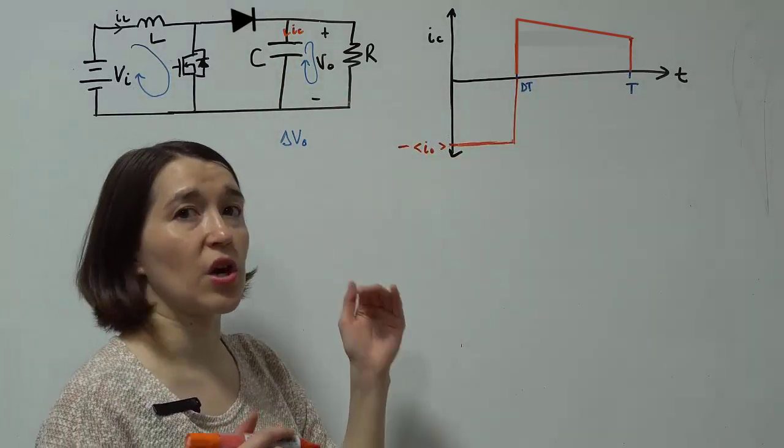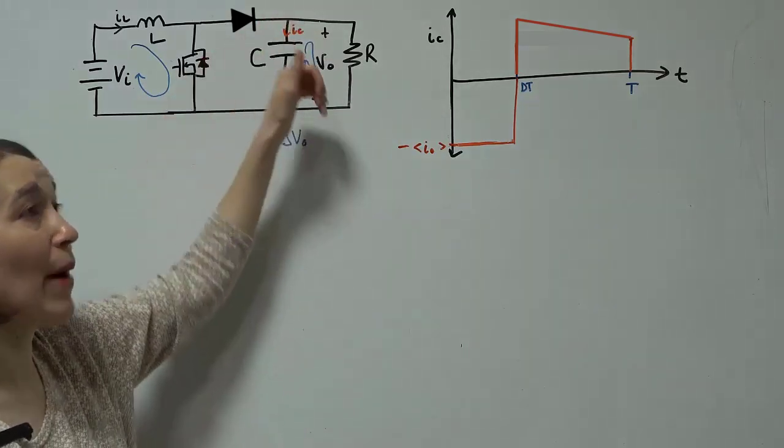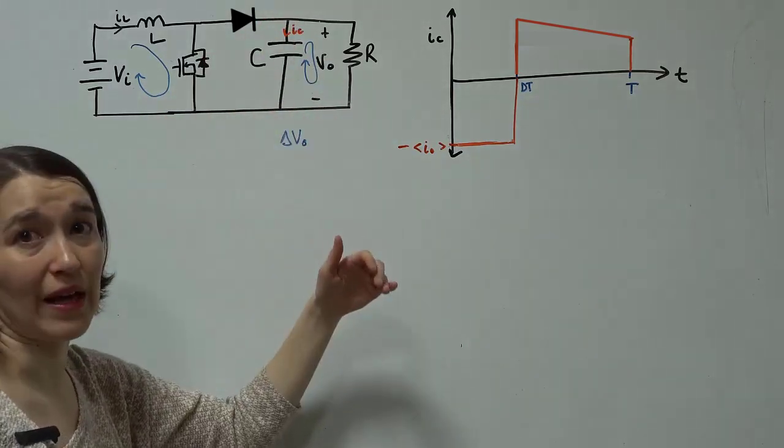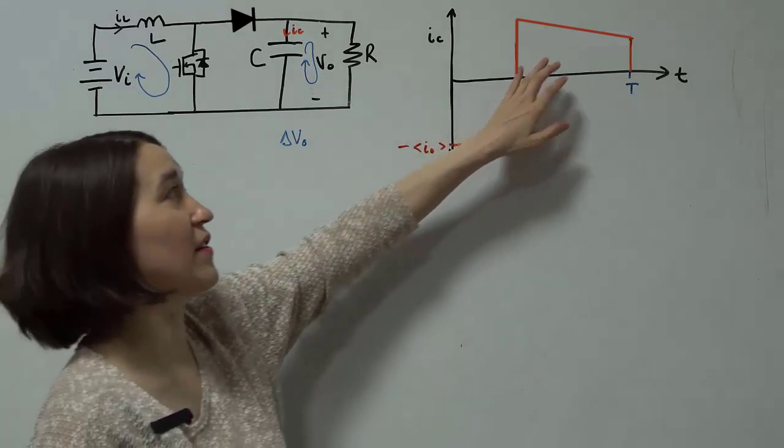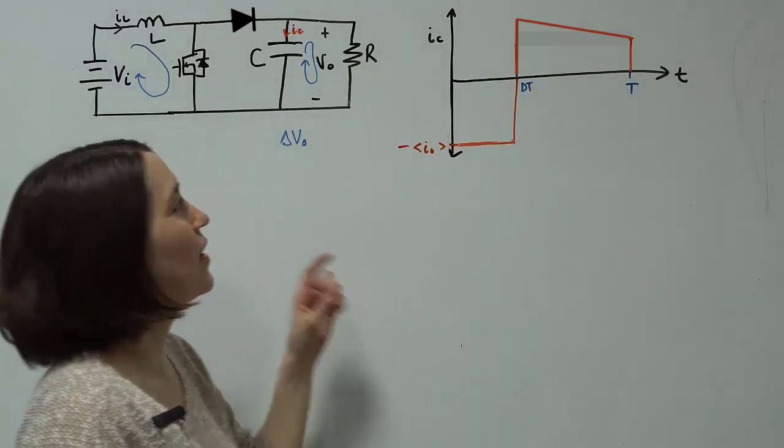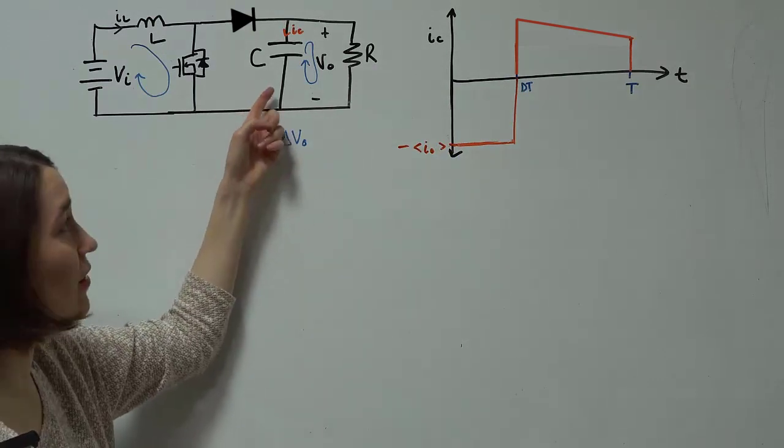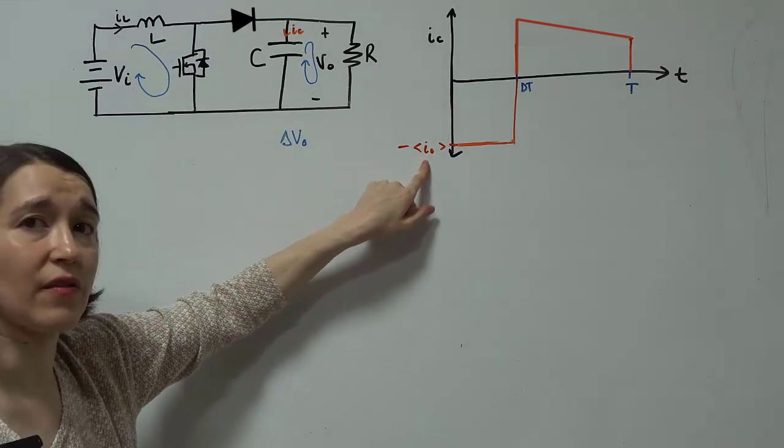And then during the other phase, all that charge that came out of the capacitor has to go back into the capacitor to charge it up to the same level. So this charge and this charge is actually going to balance. But for this calculation of how to size the capacitor, we actually can look just at this value.